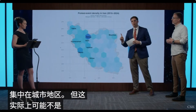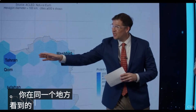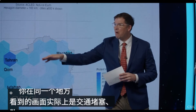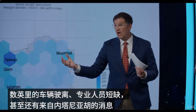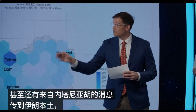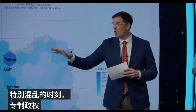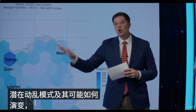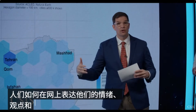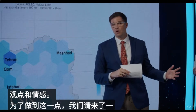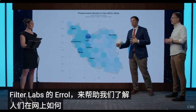But this might not be the most important way to think about the current unrest, because you see that dark blue around Tehran — that's the same place you're seeing footage of traffic jams, miles of cars leaving, petrol shortages, and even messages from Netanyahu entering into Iran itself telling citizens to evacuate. We really want to understand patterns of potential unrest in this chaotic authoritarian moment. We can't just look at physical geography — we have to look at how people express their sentiment, their opinion, their emotions online. To do that, we brought in Errol from Filter Labs to help us understand how you actually map feelings online.